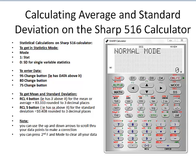If you want to calculate the average and standard deviation using your Sharp 516 calculator, the first thing you have to do is get in statistics mode. So we're going to hit mode, then 1 for stat, and 0 for single variable statistics.